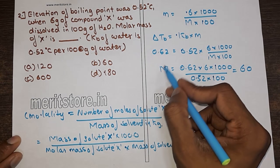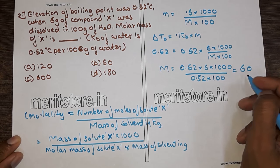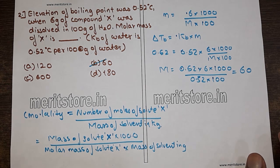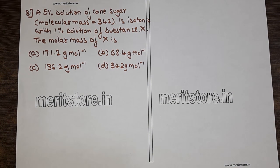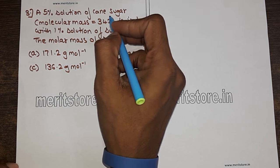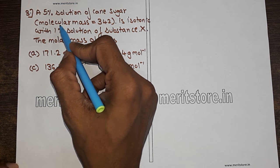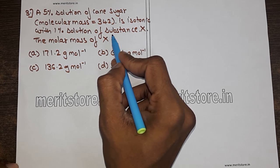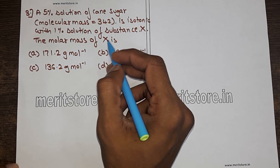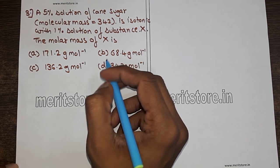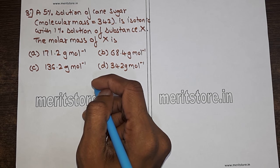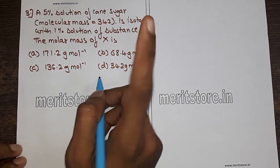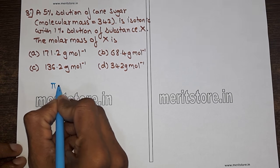Therefore the molar mass of X is 60 g/mol, which matches option B. Option B is the correct answer. Question 3: A 5% solution of cane sugar (molecular mass = 342) is isotonic with a 1% solution of substance X. Find the molar mass of X. When two solutions are isotonic, their osmotic pressures are equal: π1 = πx.